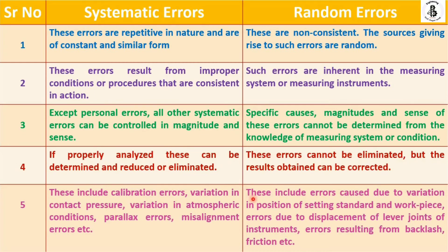Random errors include: errors due to variation in the positions of setting of standards and the workpiece, errors due to displacement of lever joints after many years of utilization, and backlash errors in micrometers — which work on screw and thread principles — generated after repeated loading and unloading of the instrument. Also included are friction errors.